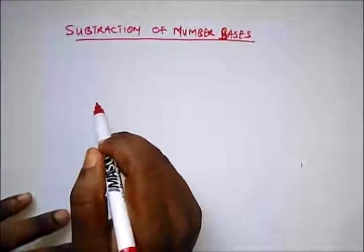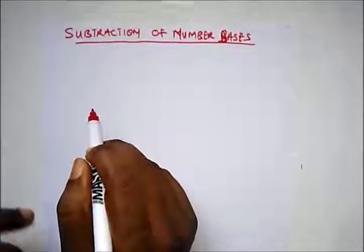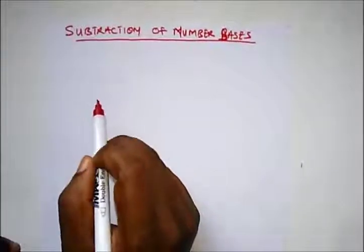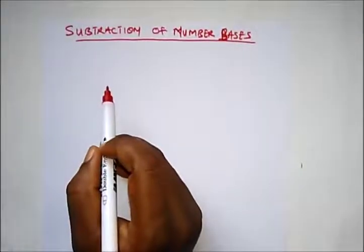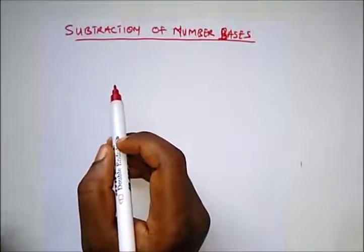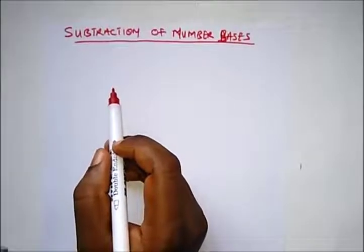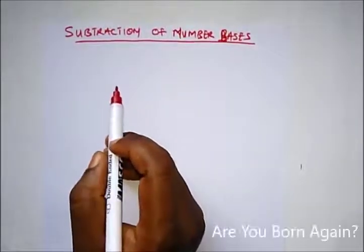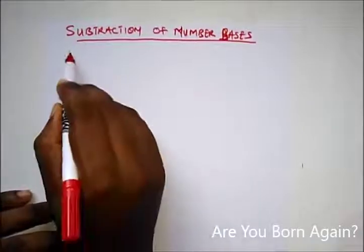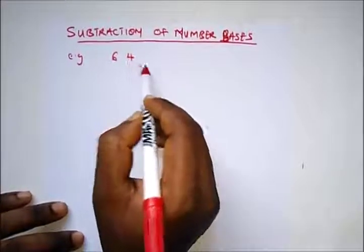Hello, welcome to Destined to Win Tutorials. This is a continuation video on number bases, and today we're treating the subtraction of number bases. How is this done? This is done by bearing in mind that when borrowing from one digit to the other, the number is the same as the base. For example, we have 64 base 7.